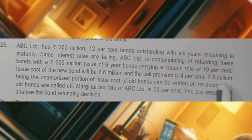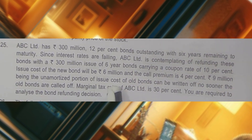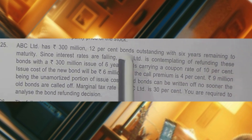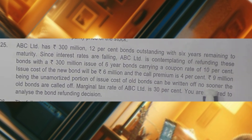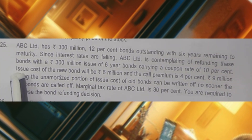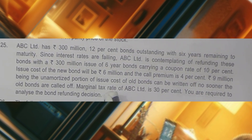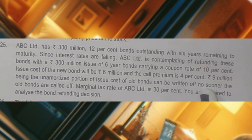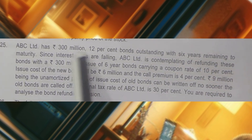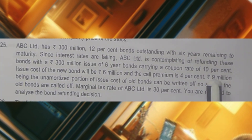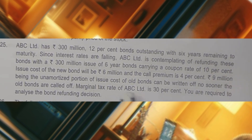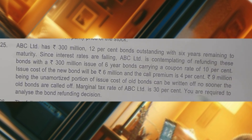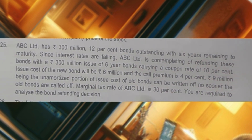These are the cash outflows. Next, there is 9 million being the unamortized portion of issue cost of old bonds, which can be written off as soon as the old bonds are called off. As soon as the existing bonds are redeemed, this issue cost of 9 million which is unamortized has to be written off. Whatever the issue cost is for issuing the bonds, it has to be amortized over the period of the bond life. As the bond has 6 years remaining life, the unamortized portion of issue cost is 9 million. The company has a marginal tax rate of 30%. Now it is asking us to analyze the bond refunding decision.